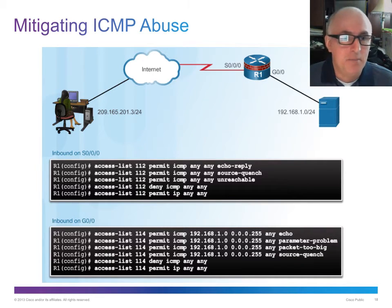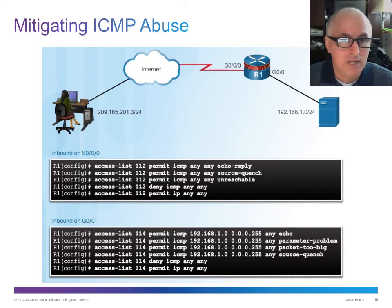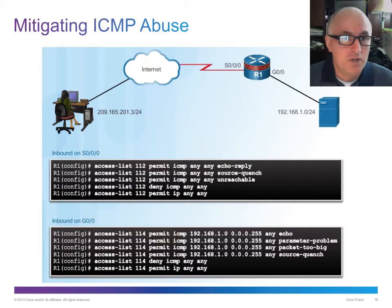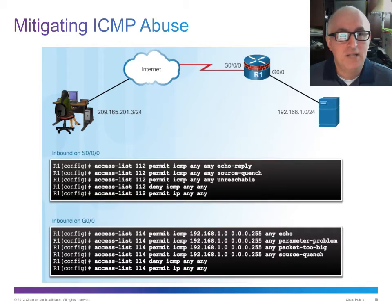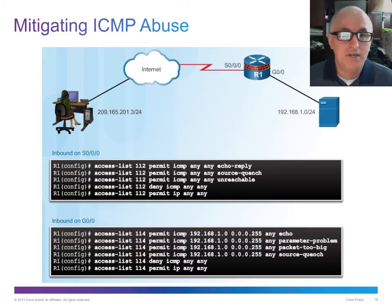This one deals with ICMP. ICMP is a great protocol used with ping and traceroute for network testing, but it can also be abused to find out information we don't want hackers to know. We can use an access list to allow pings from the inside out, but not from the outside in — limiting the ability for outsiders to ping our network, while still allowing ping replies to come back in so we can ping out and get a reply. That's what these two different access lists on the interfaces are showing.